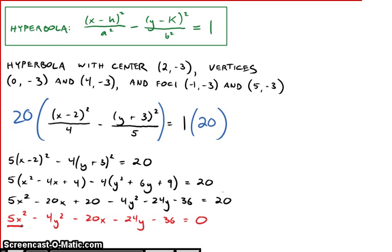Take care of the exponents first and then distribute your 5 and your 4 and you will eventually get a formula with an x squared term, a y squared term, an x, a y, and a constant.